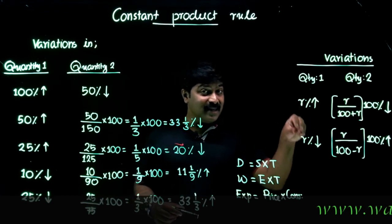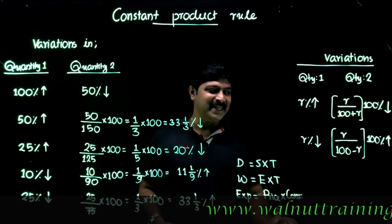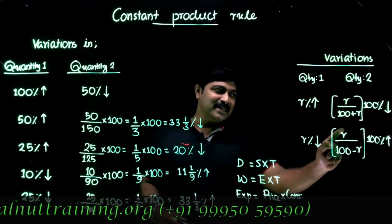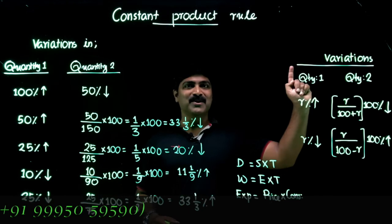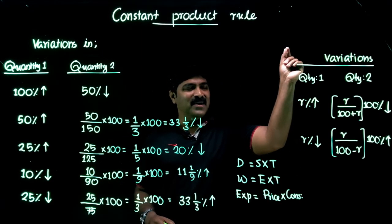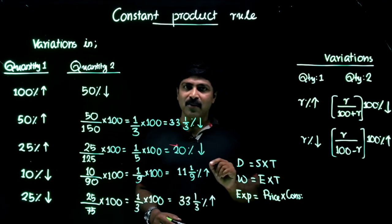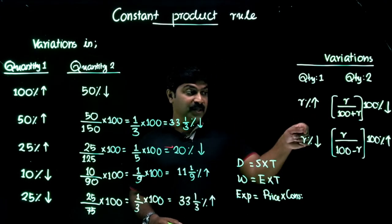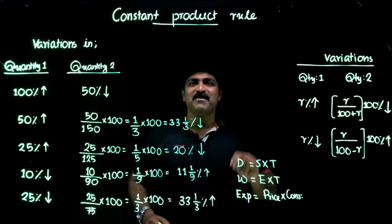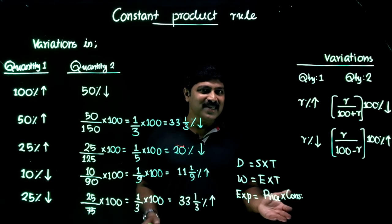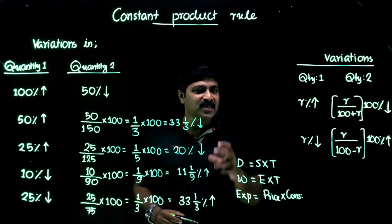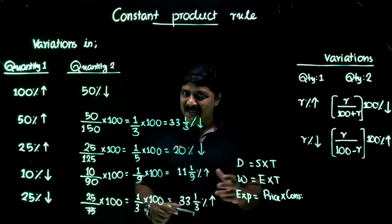If the first component is decreased by r percent, the corresponding increase on the second component is r / (100 − r) × 100 percent. It's easy to remember: if it's an increase, add r in the denominator; if it's a decrease, subtract r from the denominator. Whenever you face such a situation, you can effectively apply this result. Thanks for watching.